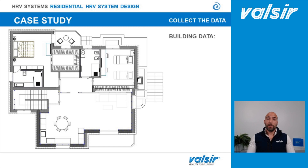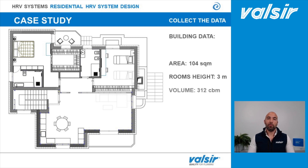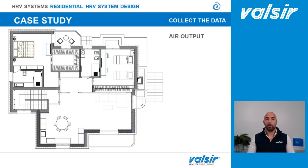We're now going to see a real example of what an HRV designing process looks like, taking a real case from the technical department. We have a 104 square meter apartment with an average ceiling height of 3 meters, for a total volume of 312 cubic meters. First, we have to decide from which rooms to extract the air — those where daily activity generates the most humidity, where we want to eliminate bad smells, or where there is poor ventilation.